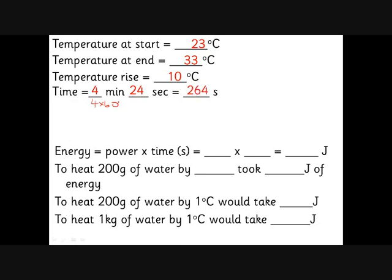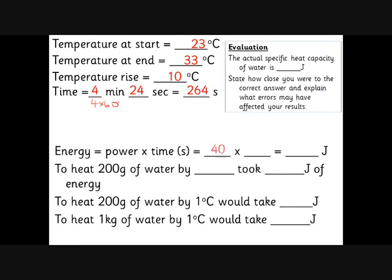Then we calculate the energy we put in. Energy equals power times time. The power was 40 watts and it took 264 seconds, so we calculate 40 times 264 which gives 10,560 joules. That's the amount of energy we put in. So we heated up 200 grams of water by 10 degrees C and that took 10,560 joules.